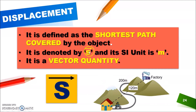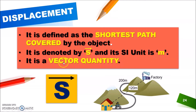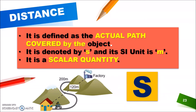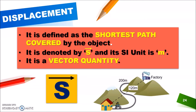Displacement is also denoted by S but with an arrow on top. This arrow represents direction. So this is the symbol of displacement. The SI unit is the same — meters — and it is a vector quantity. I hope you understood the difference between distance and displacement.